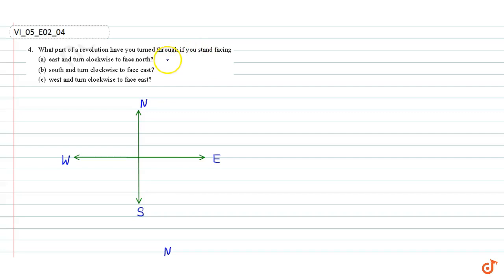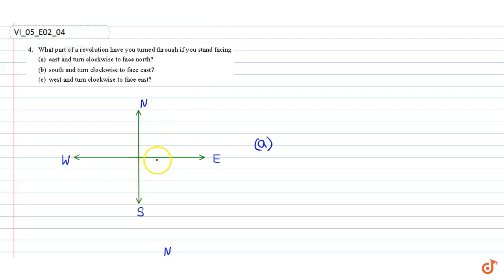In this question we have to find out what part of a revolution you have turned through. Part a: if you stand facing east and turn clockwise to face north-east, and then clockwise to face north, that is three-fourths of a revolution, which is 270 degrees.